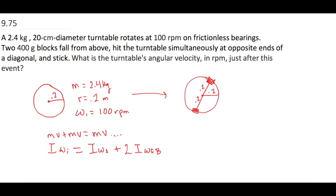We can factor in the two because both blocks have the exact same mass, the exact same speed, and the exact same radius, so each block's term is identical. However, we now have two different omega finals in the equation, and that's a problem we need to address.